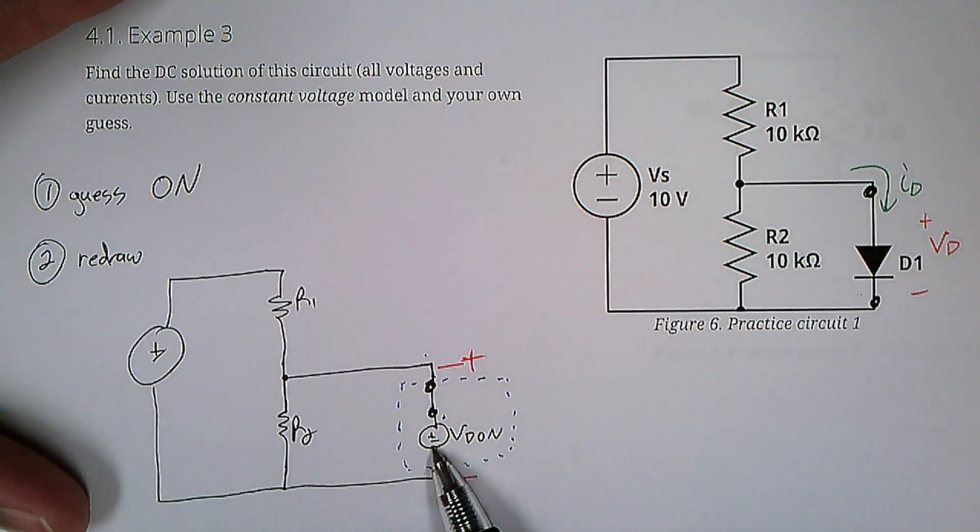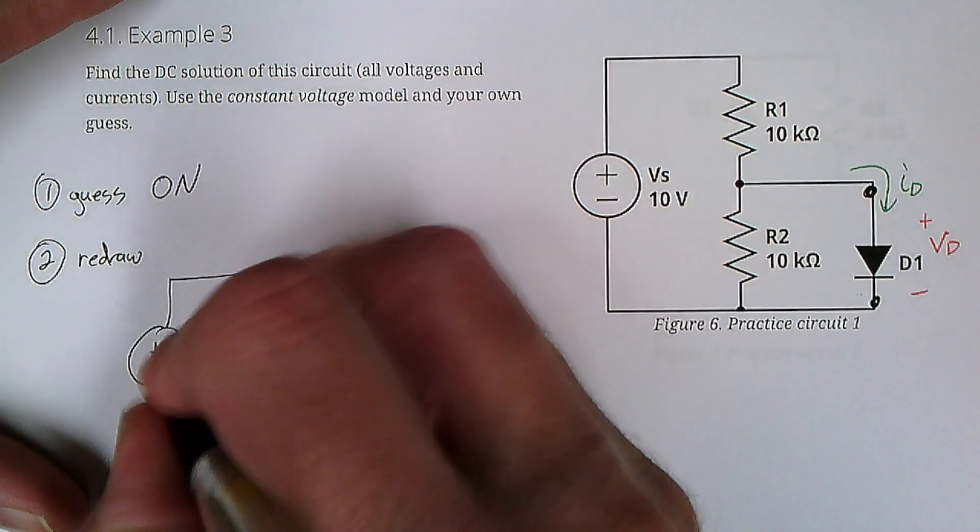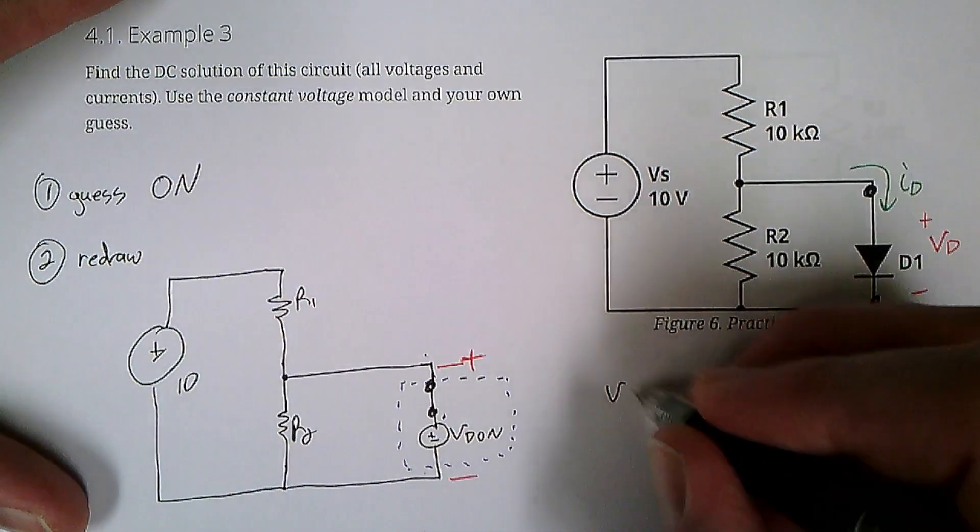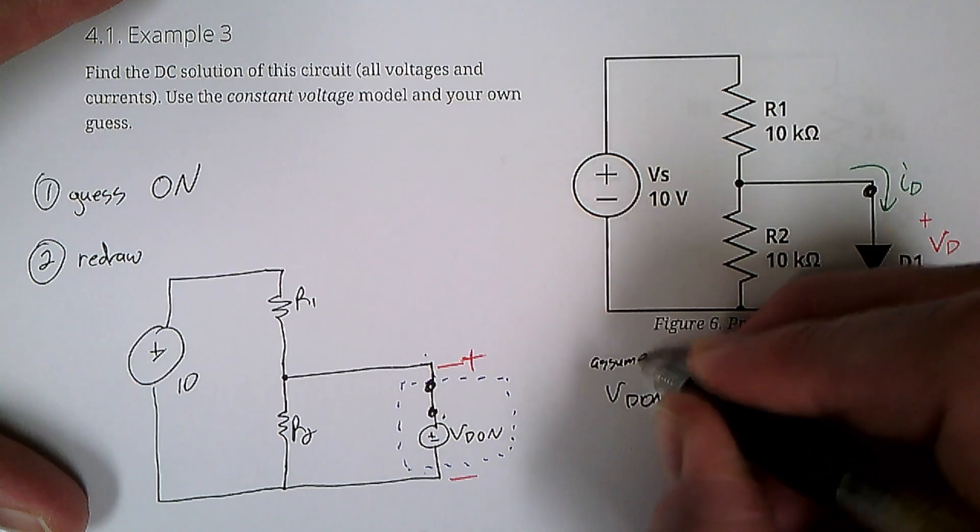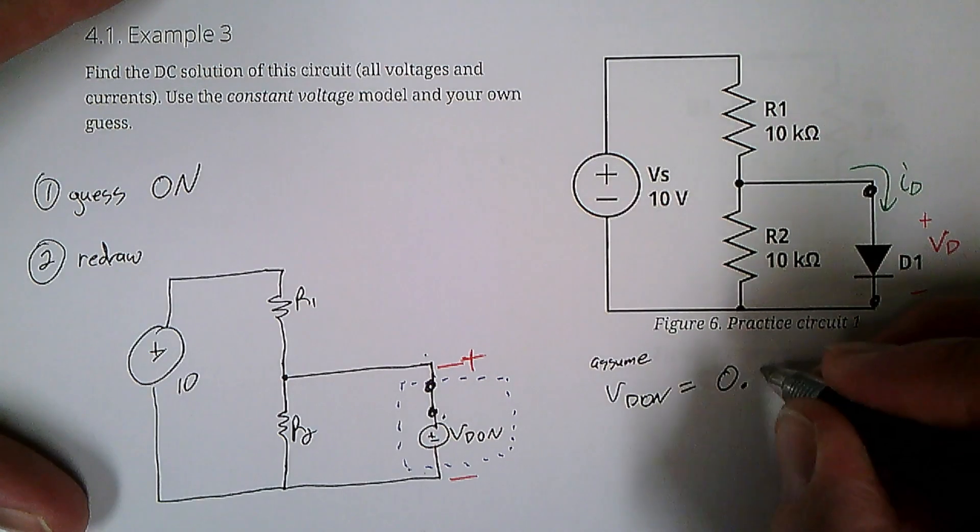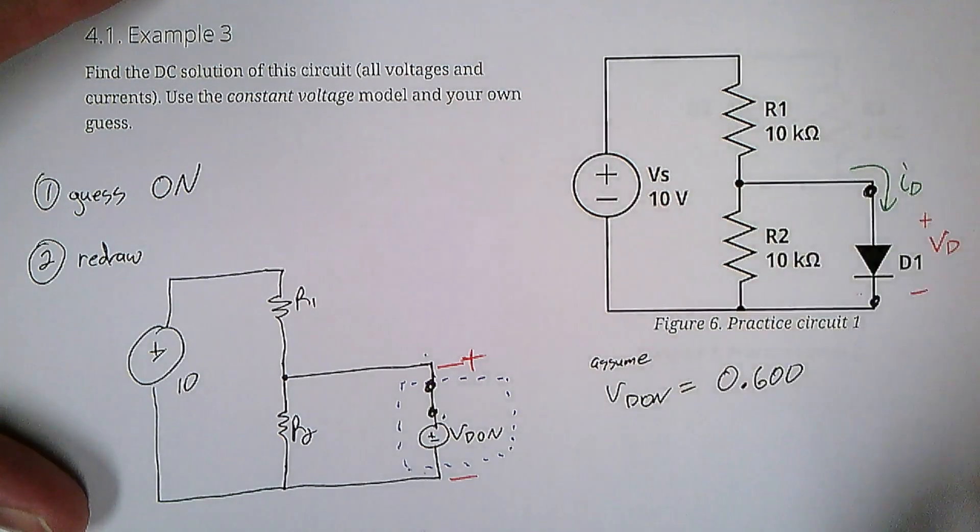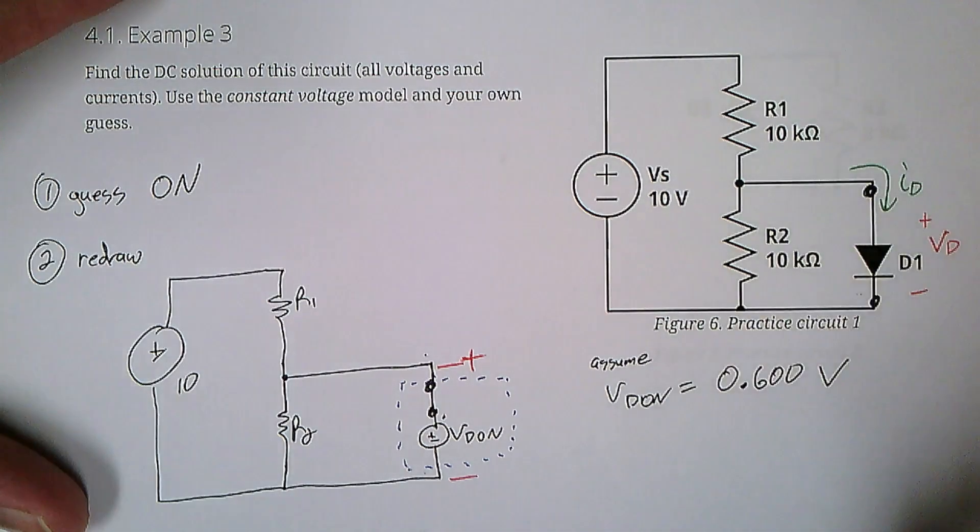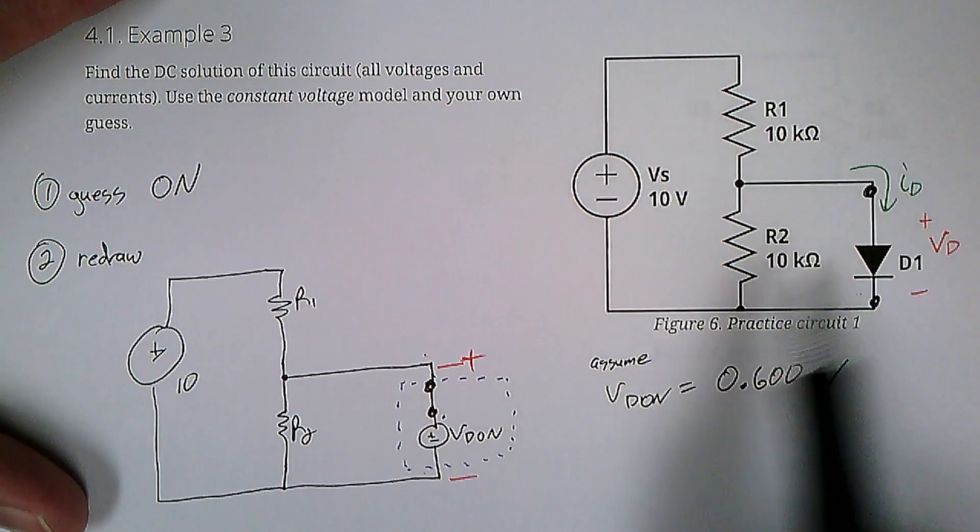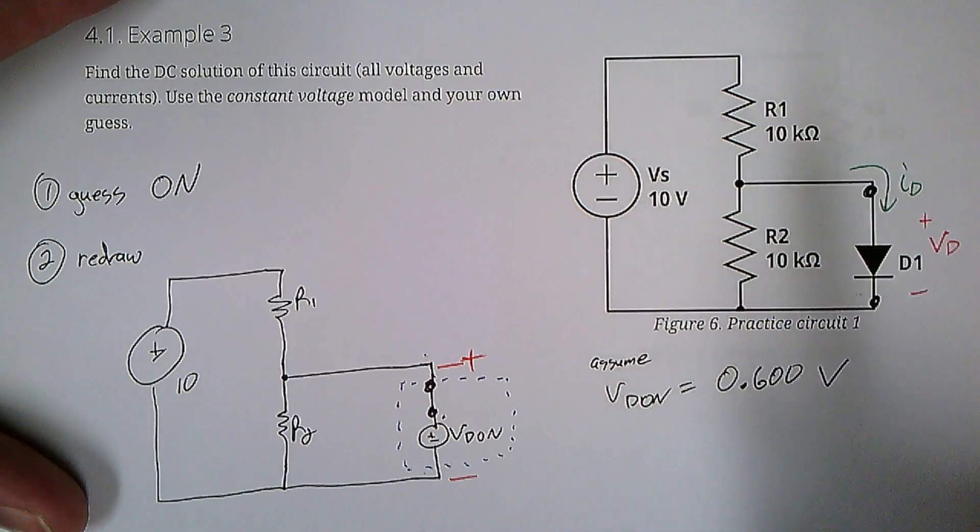What should we choose for VD on? How about, let's say VD on is 600 millivolts. We've seen that in the lab, with a few milliamps flowing through it, I expect to see a few milliamps range flowing in this circuit.